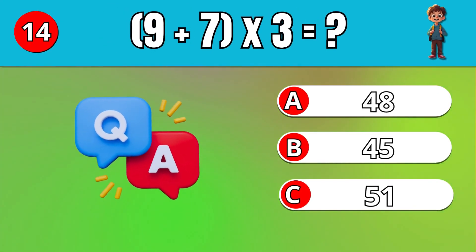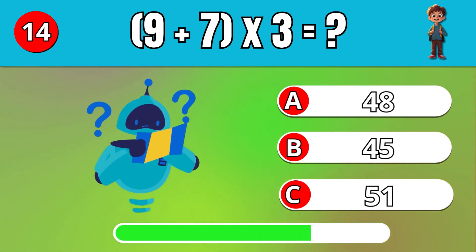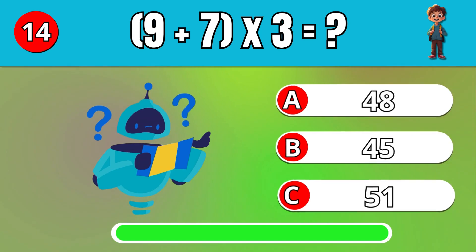What is 9 plus 7, then multiply by 3? C. 48.